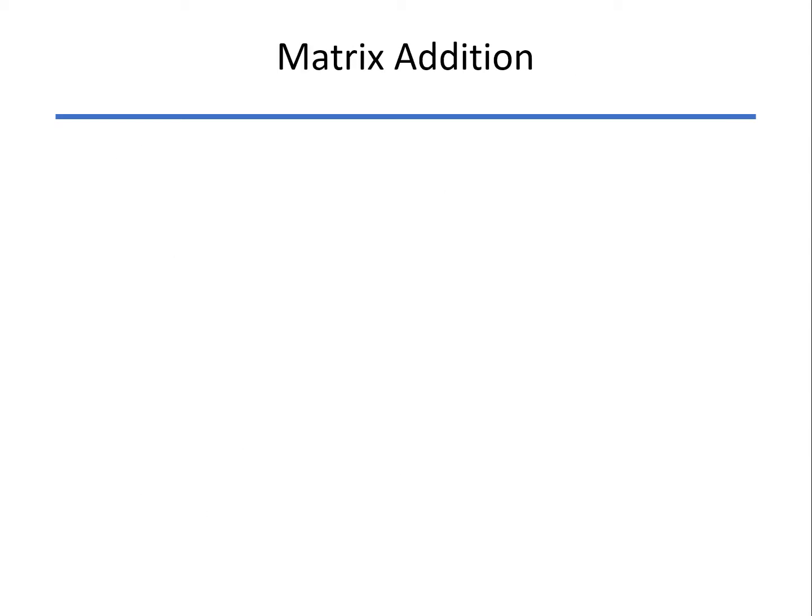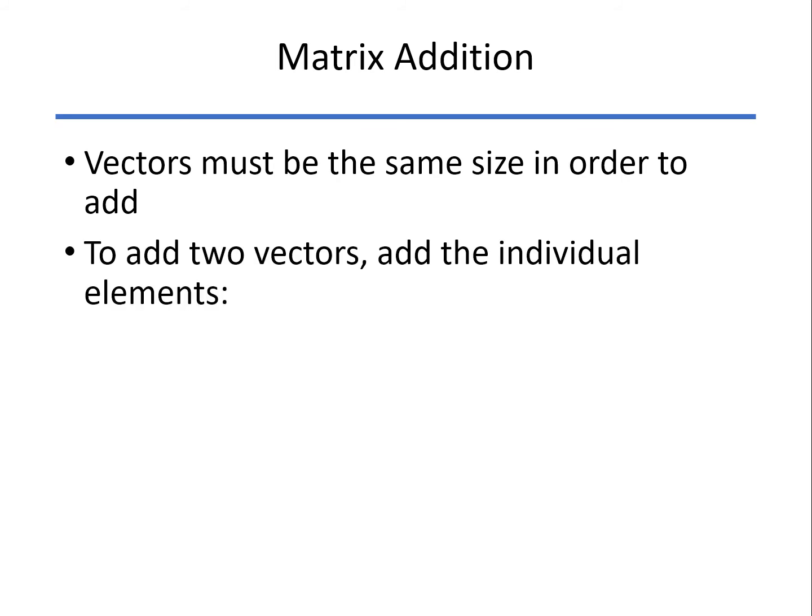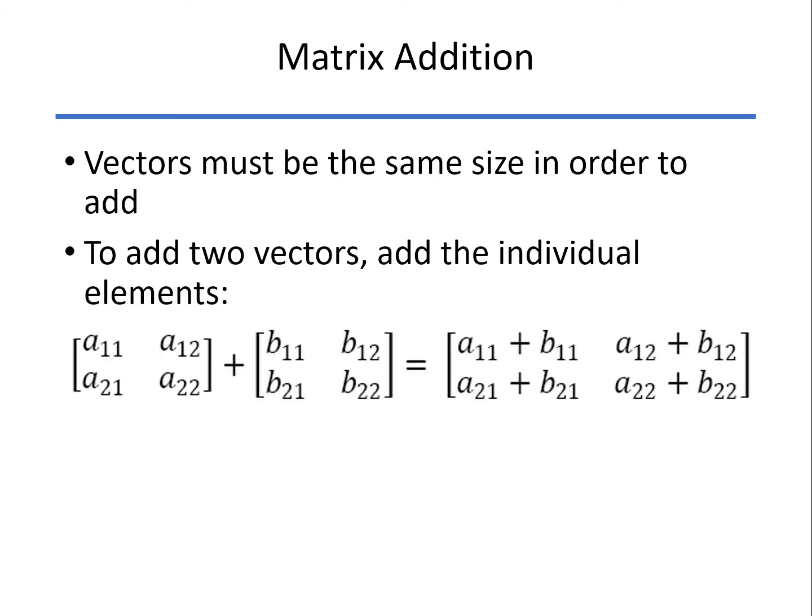The easiest thing to do with matrices is matrix addition. You have to have the same size in order to add them, and you just add the individual elements. In this case, you can switch the order and say that A plus B is equal to B plus A.